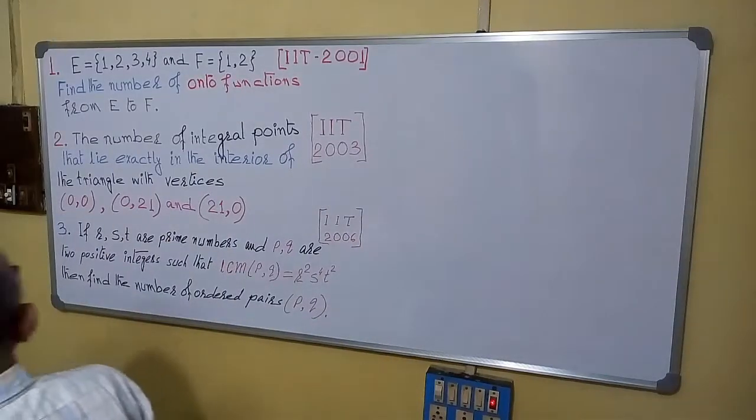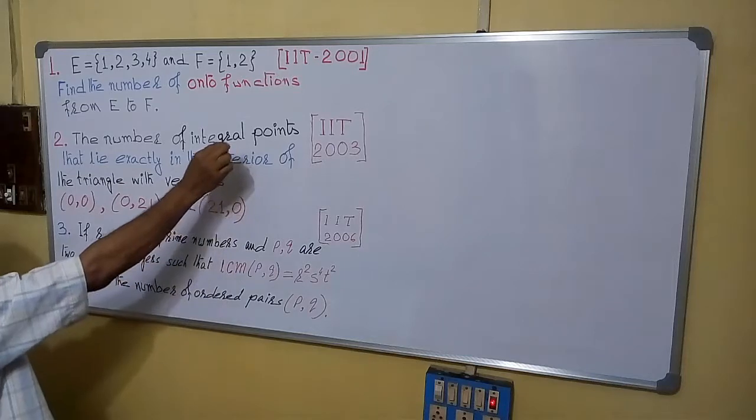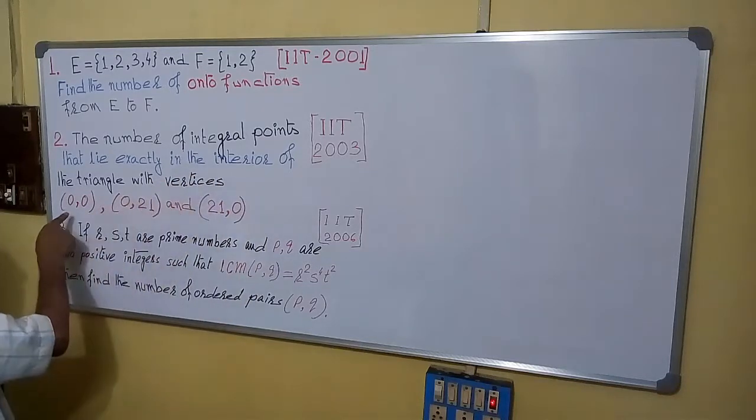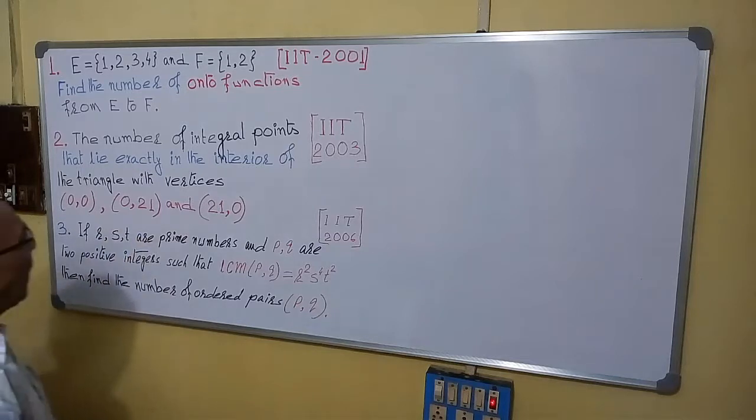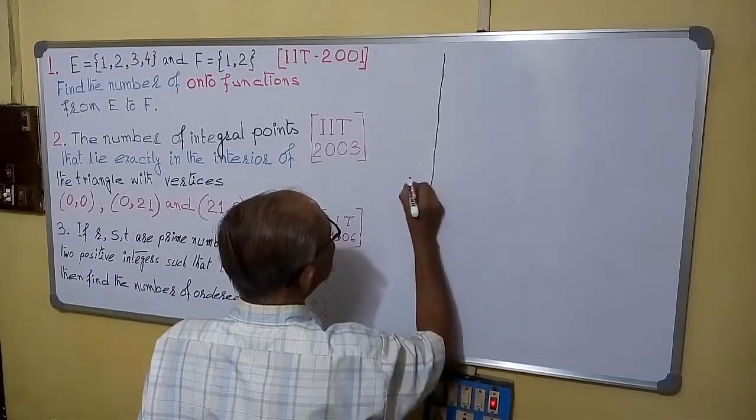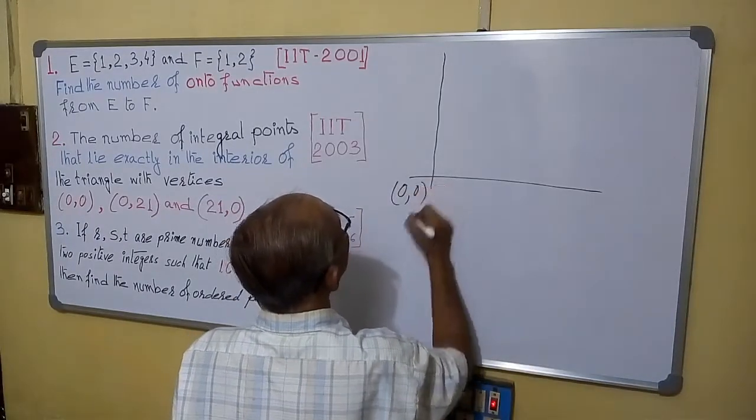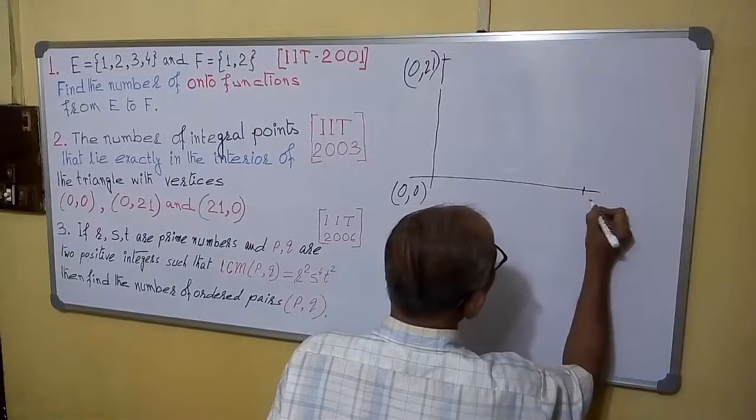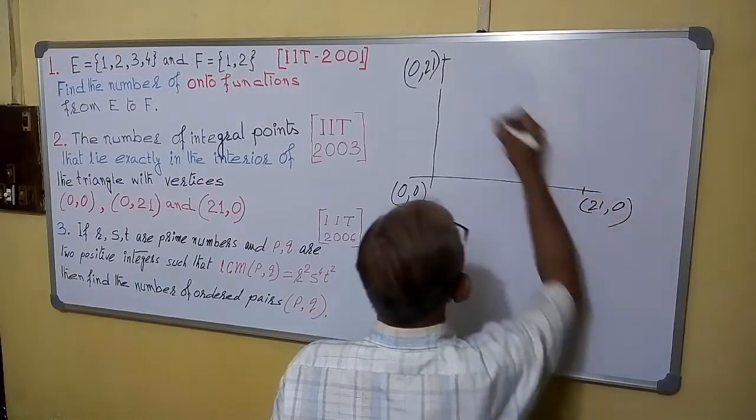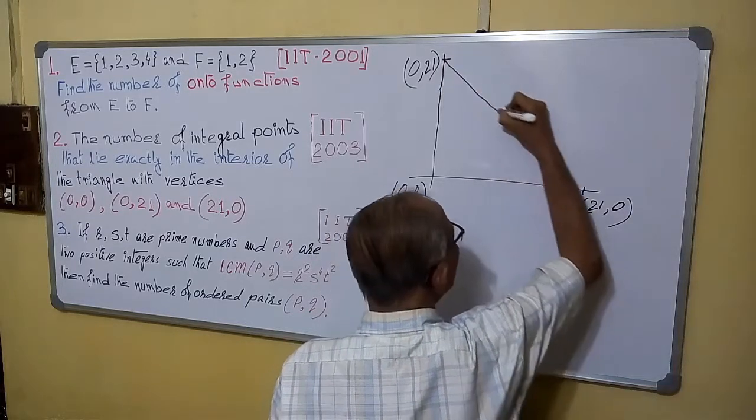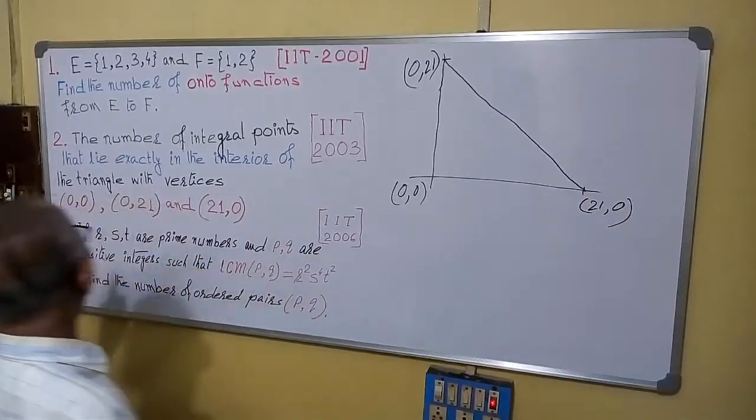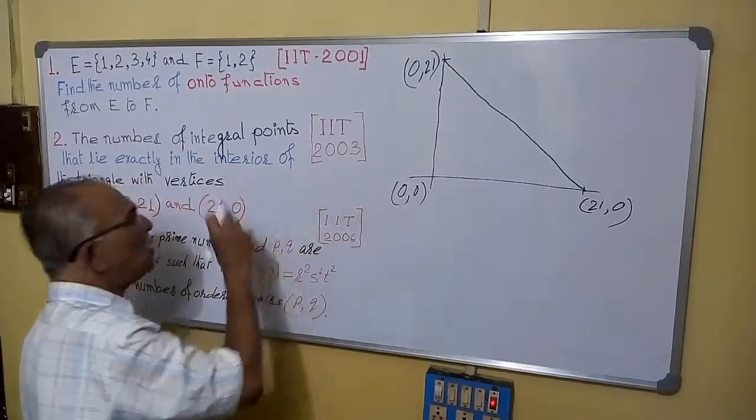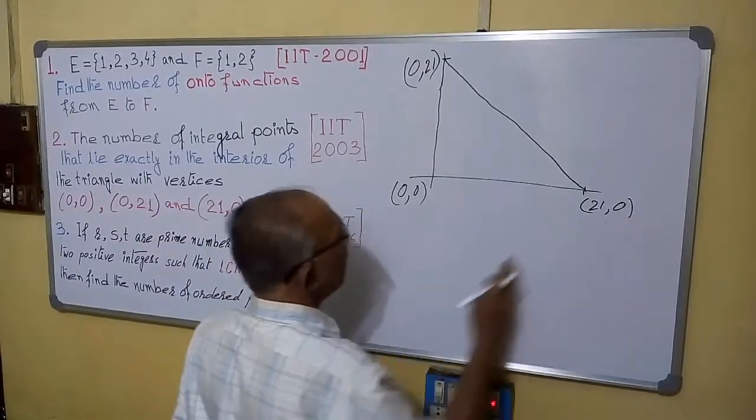Now see the question number two. The number of integral points that lie exactly in the interior of the triangle with vertices 0,0, 0,21 and 21,0. Let us assume this is the coordinate axis, this is 0,0, this is one vertex, 0,21 is another vertex and 21,0 is the third vertex. So this is the triangle. Remember here, the number of integral points which means the x coordinate is also an integer, y coordinate is also an integer. Both the coordinates are integral.